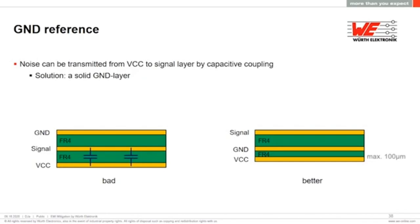If you have a signal line between VCC and ground, the VCC and ground layers next to each other will create parasitic capacitance, leading to signal interference between voltage and load signals. This makes the system unstable. To avoid this, bring the ground layer in between VCC and signal — sandwiching the ground layer. The recommended layer thickness is a maximum of 100 µm, with 50–60 or 60–80 µm recommended.